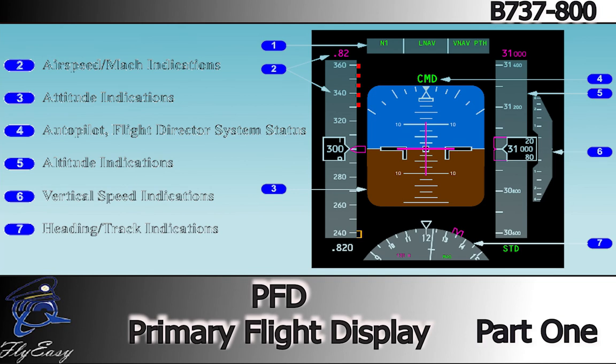The primary flight display, or PFD, presents a dynamic color display of all the parameters necessary for flight path control. The PFDs provide the following information: